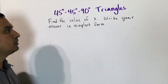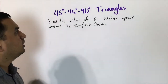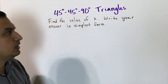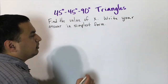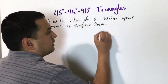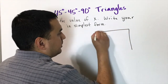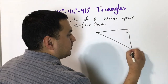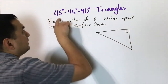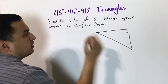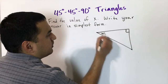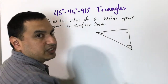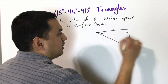This lesson deals with special right triangles. We're going to start looking at the first one, which is going to be the 45-45-90 triangle. One angle is 90 degrees, and because the other two angles are the same measure — 45 and 45 — that means it's an isosceles right triangle, which means the two legs are the same length.